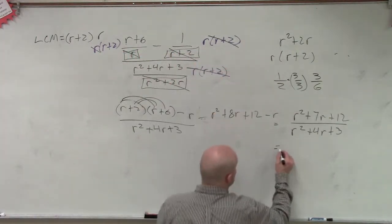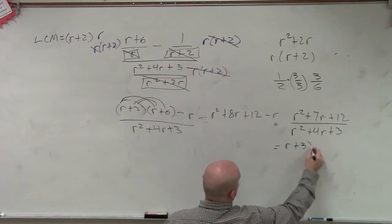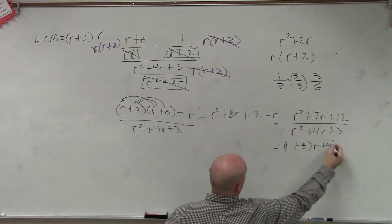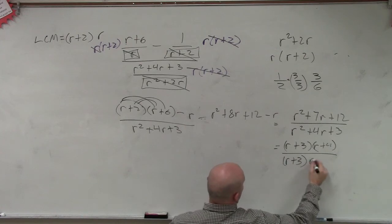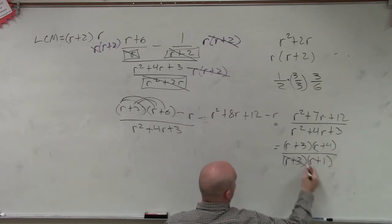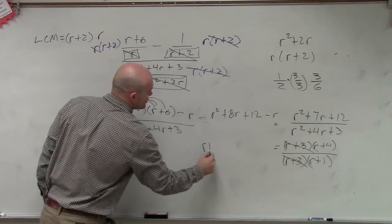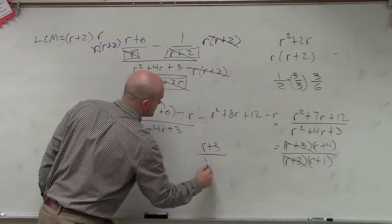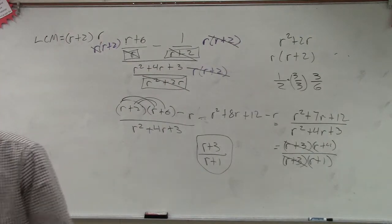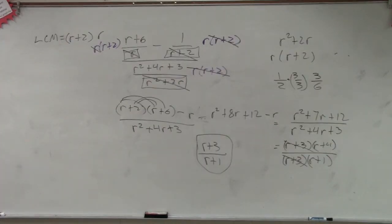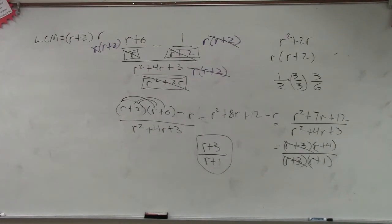So now that I've completed this, now I factor out both sides and I get r plus 3 times r plus 4 divided by r plus 3 times r plus 1. The r plus 3's divide out to 1. So my final answer is r plus 4 divided by r plus 1.